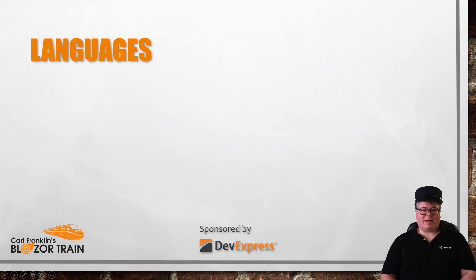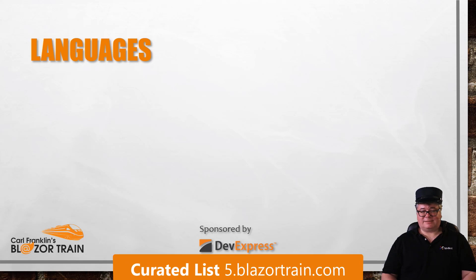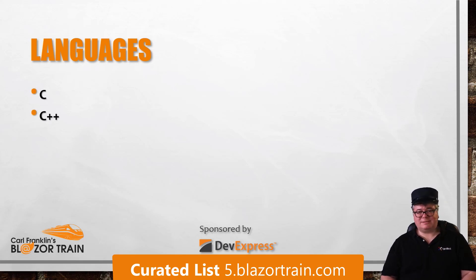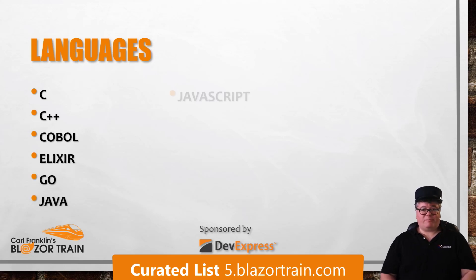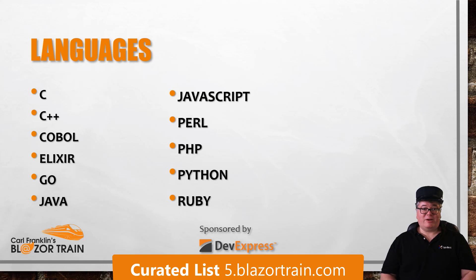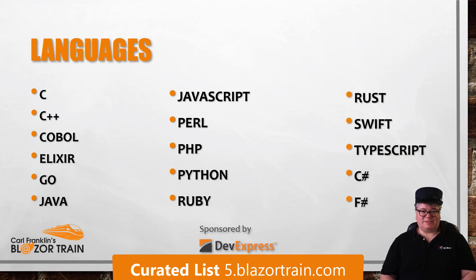So what languages compile into Wasm? According to this curated list, as of May 20th, 2020, there are over 40 languages. Those include C, C++, COBOL, Elixir, Go, Java, JavaScript, Perl, PHP, Python, Ruby, Rust, Swift, TypeScript, and of course C# and F# via Blazor. There is also a tool called AssemblyScript that compiles a strict subset of TypeScript to WebAssembly.